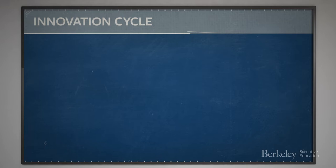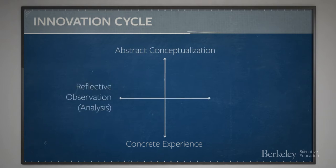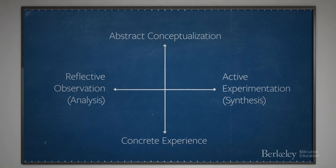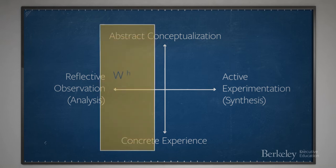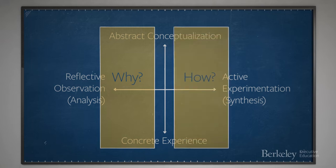that as we learn, we toggle between being engaged in concrete experiences and processing those experiences with abstract conceptualization. And we toggle between reflective observation, or analysis work, and active experimentation, or synthesis work. This creates a two-by-two matrix. The left half of which focuses on our asking why, framing the problem to be solved for your customer. And the right half of which focuses on asking how, coming up with a solution for your customer.